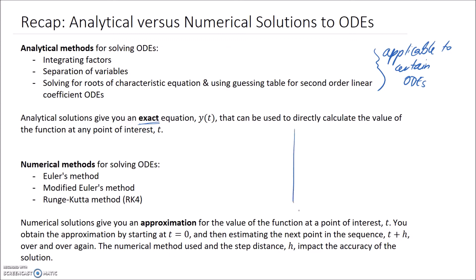So let's pretend this axis is t and this is y, and we're able to plot the exact solution as something like this. Now let's move on to numerical methods for solving differential equations. There are a few different ways we can do it — I've listed three: Euler's method, modified Euler's method, and the Runge-Kutta method RK4.